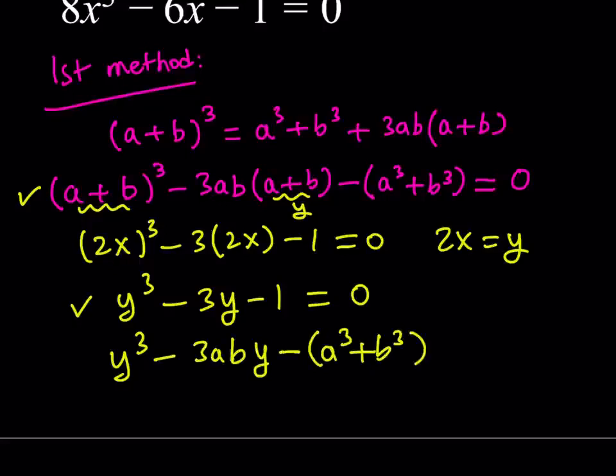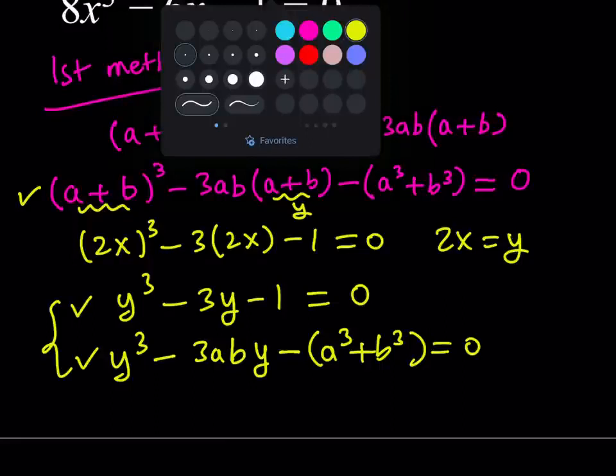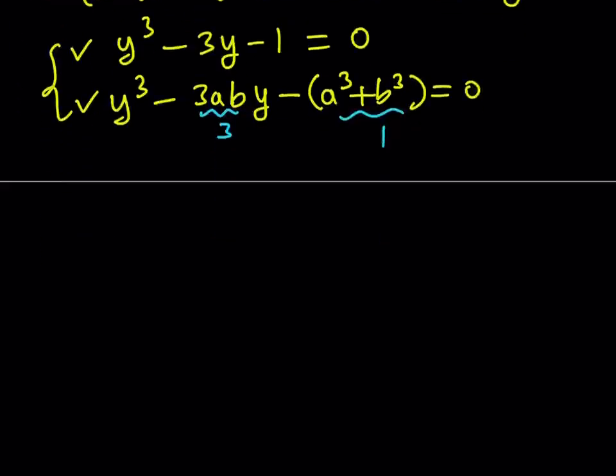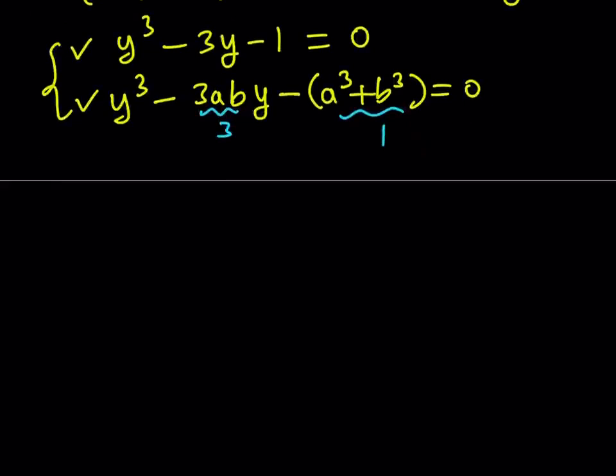Now, you can go ahead and compare these two equations, right? And then see what happens. Well, if they are the same, then we can safely say that 3ab is equal to 3. Like right here, you can see that, right? 3ab is equal to 3. And this is equal to 1. That gives you what? A system of equations. Let's go ahead and write that down. And interestingly, while solving the cubic, you end up with a quadratic system.